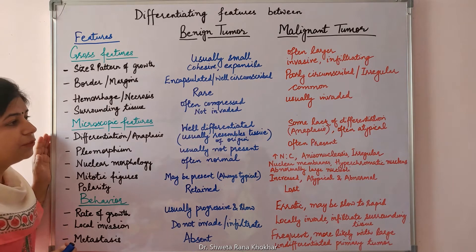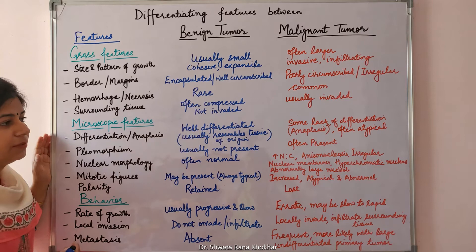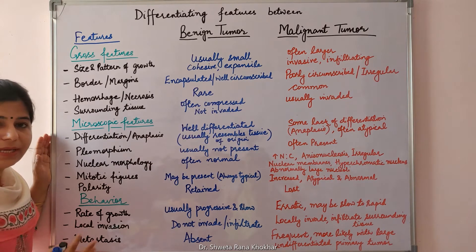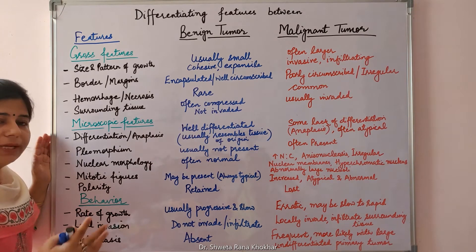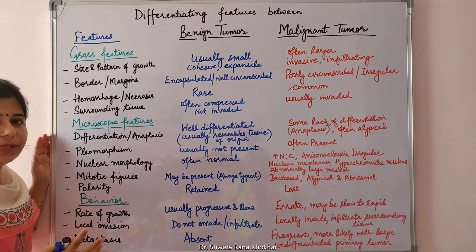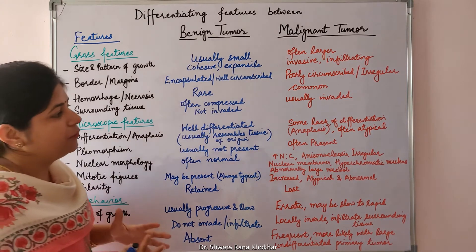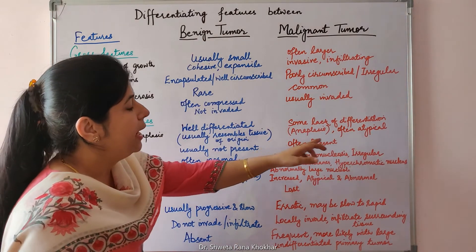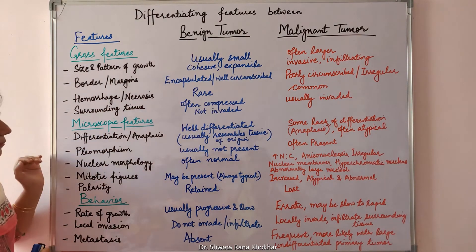Whereas in malignant tumors, there is some lack of differentiation or anaplasia. Anaplasia is lack of differentiation. Though they can be well differentiated, some lack of differentiation is present, and the cells are often atypical.